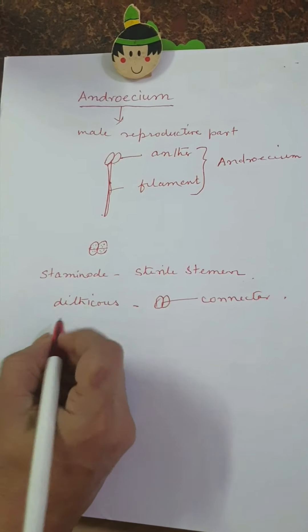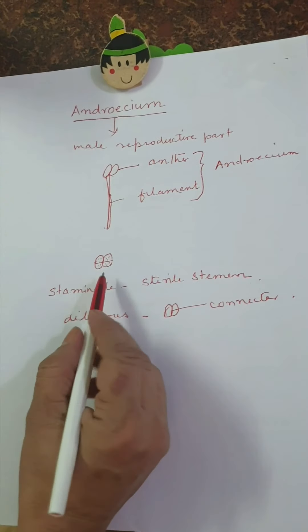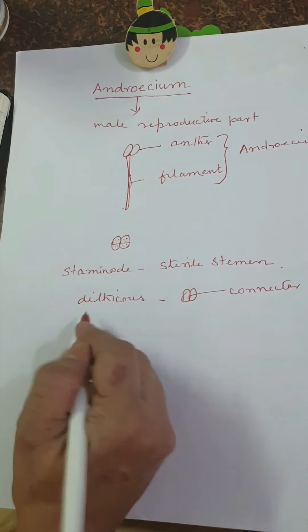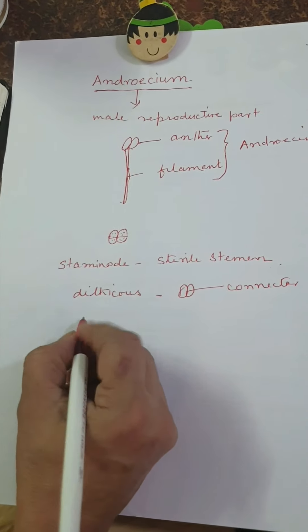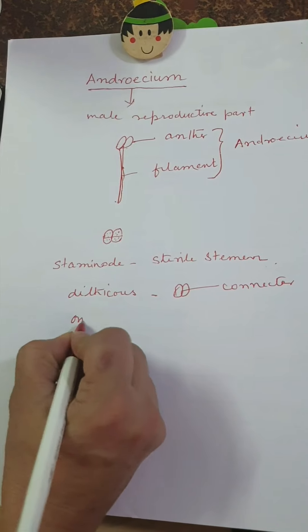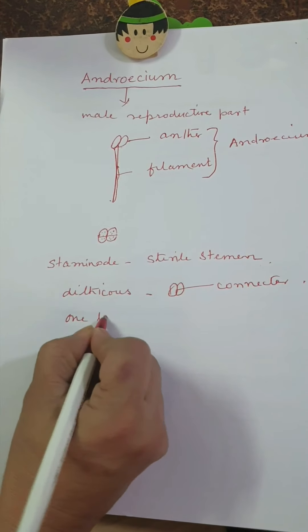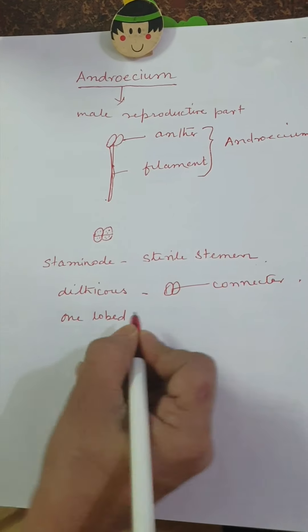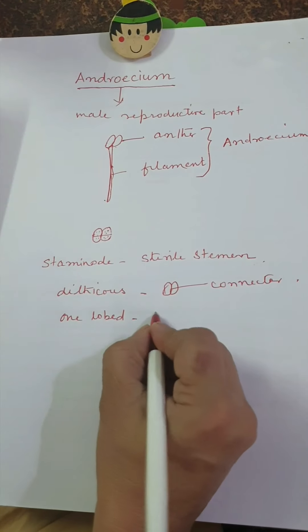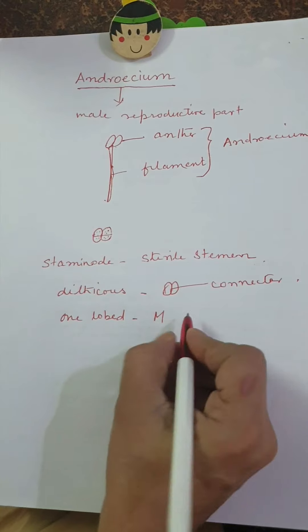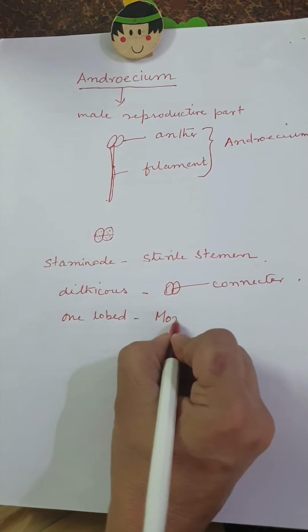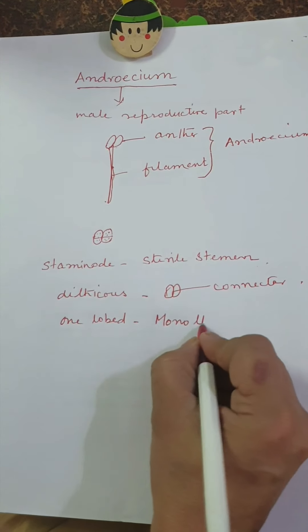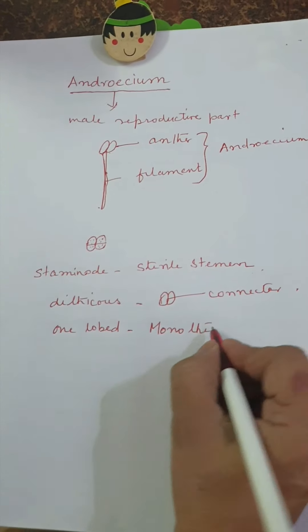Sometimes the anther is one-lobed, which is known as monothecous. 'Mono' means one, so monothecous refers to a one-lobed anther.